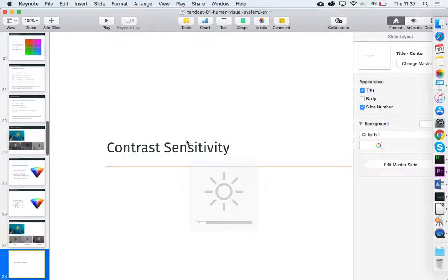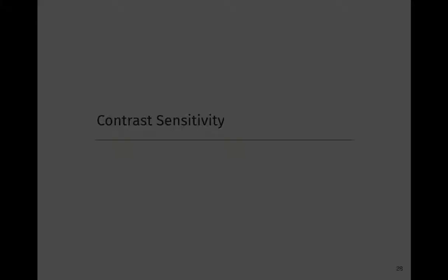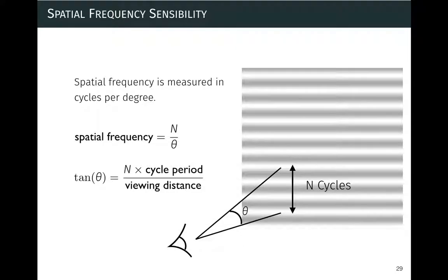Now let's talk about spatial frequencies and texture — what we can actually see. A spatial frequency is defined using a sine wave going from dark to bright. Theta is the angle that your eye makes with n lines on a display. Spatial frequency is then the number of cycles divided by that viewing angle — so it's cycles per degree of visual angle.